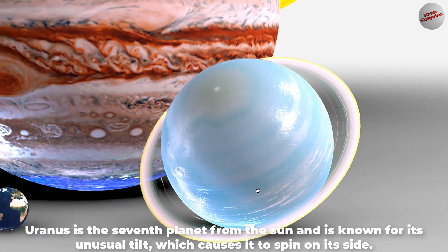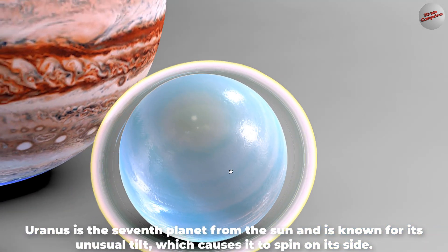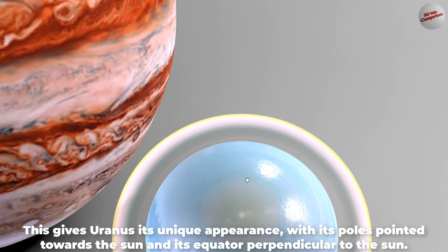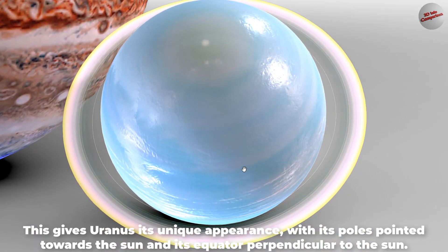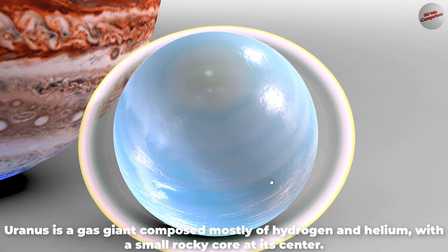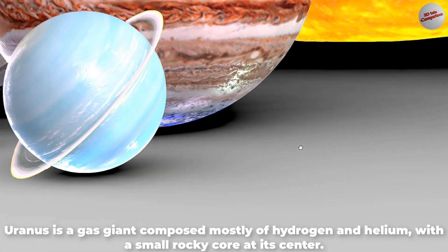Uranus is the seventh planet from the Sun and is known for its unusual tilt, which causes it to spin on its side. This gives Uranus its unique appearance, with its poles pointed towards the Sun and its equator perpendicular to the Sun. Uranus is a gas giant composed mostly of hydrogen and helium, with a small rocky core at its center.